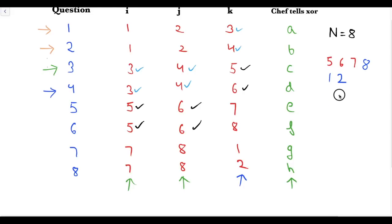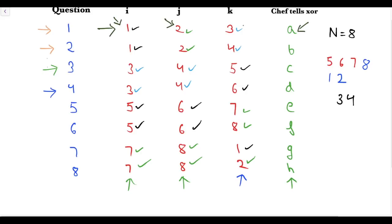The remaining elements are A[3] and A[4]. Indexes 1, 2, 7 and 8 have all been used three times, so we cannot ask more questions. However, we can use the previous question answers. From question one — A[1] XOR A[2] XOR A[3] equals A — since we now know A[1], A[2] and A, we can find A[3]. From question two — A[1] XOR A[2] XOR A[4] equals B — we can find A[4]. This is how we find all elements of the sequence.